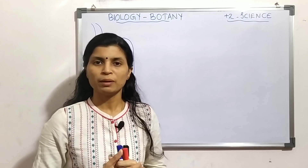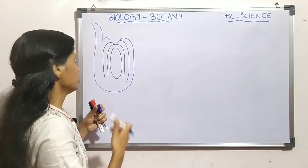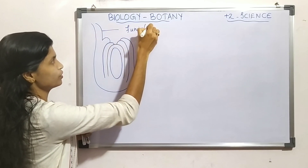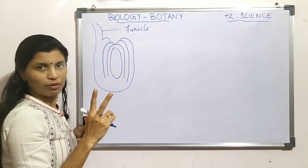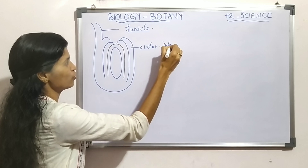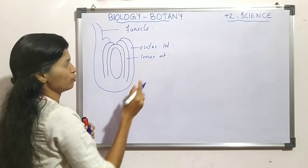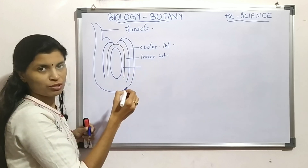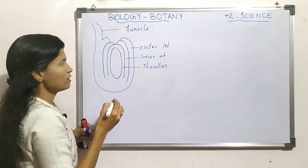The first part of the ovule is the funicle. Then there are two protective coverings — the outer integument and inner integument. Inner to this inner integument, there is a nutritive layer called the nucellus.